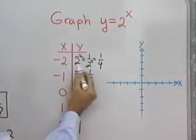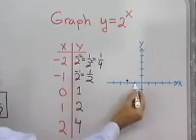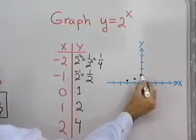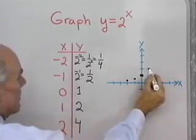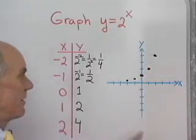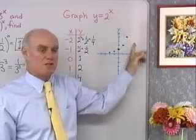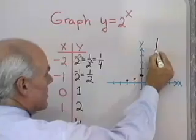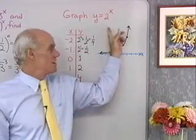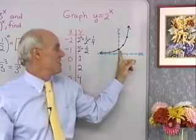So let's graph the ordered pair negative 2, 1 fourth — I'll go back 2 and up 1 fourth. Then negative 1, 1 half; then 0, 1; then 1, 2; and 2, 4. You can see that if I go further, when x equals 3, y would be 8; when x equals 4, y is 16, and so on. Now I'll connect these points with a nice smooth curve. The graph of y equal 2 to the x goes through the point 0, 1 on the y-axis, and all exponential functions will go through that point.